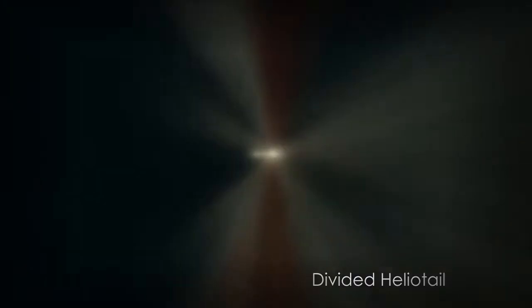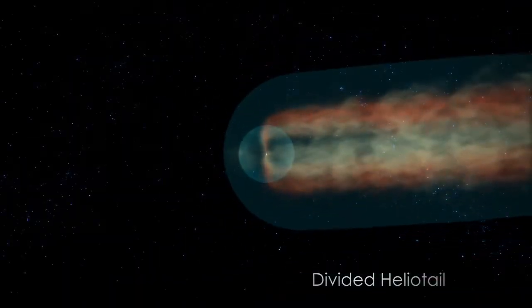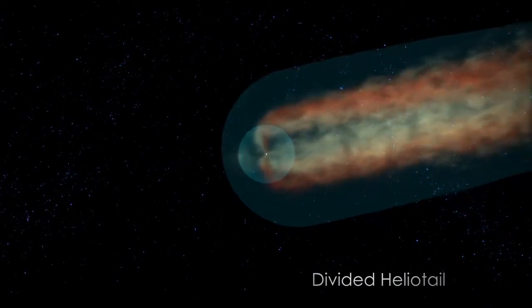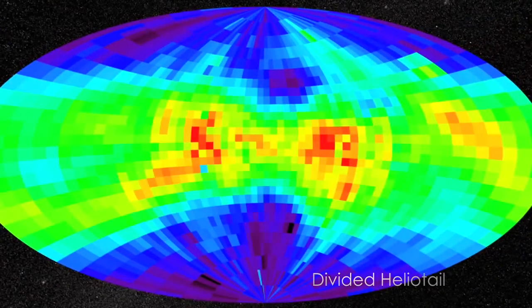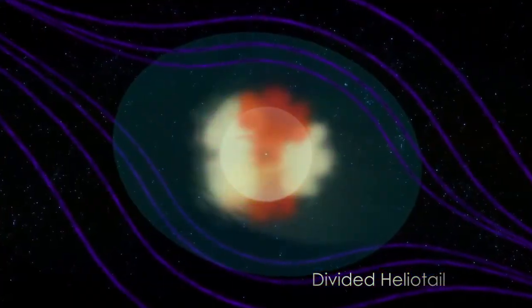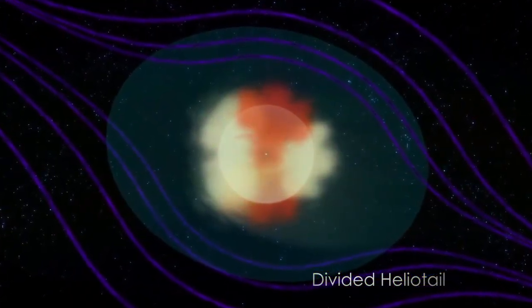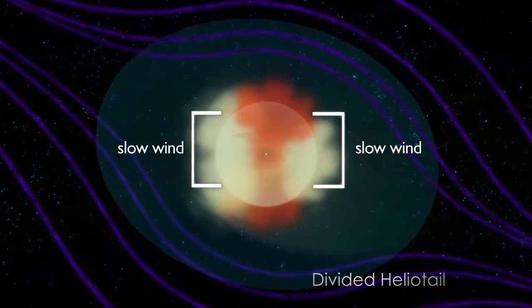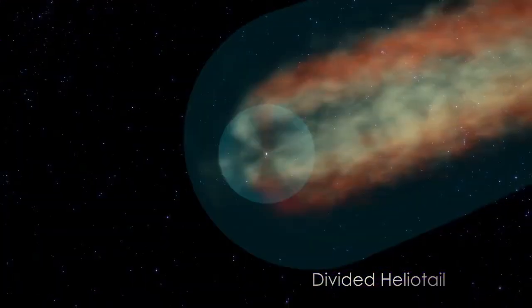IBEX recently mapped the boundaries of the solar system's tail, called the heliotail. If we could look straight down the tail, we would see a shape a little like a four-leaf clover. The two side leaves are filled with slow-moving particles, and the upper and lower leaves with fast ones. The entire shape is rotated slightly.